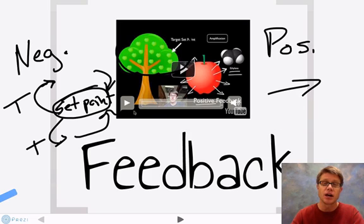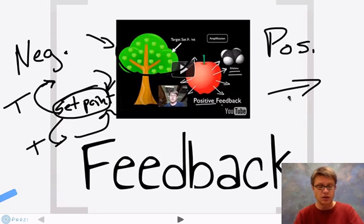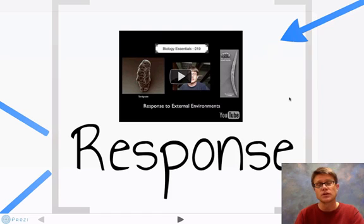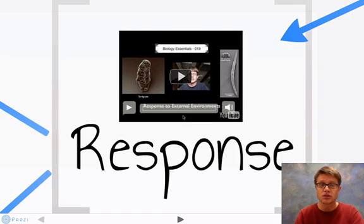Or in this podcast on feedback loops I talk about ethylene and how fruit ripening can transfer from fruit to fruit, and so that can speed up reactions. So feedback then, remember, results in a response. So that's a response from the organism itself. And I talk about response to external environments in this podcast.